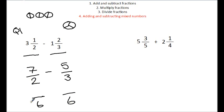So to get 2 to 6 I need to multiply by 3. So that's multiplying the top and the bottom by 3. So that's 21 over 6. To get 3 to 6 I need to multiply by 2. 5 times by 2 is 10.